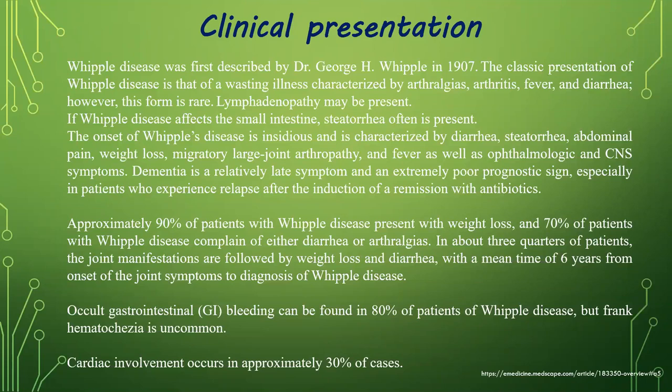Approximately 90 percent of patients with Whipple disease present with weight loss, and 70 percent complain of either diarrhea or arthralgias. In about three-quarters of patients, joint manifestations are followed by weight loss and diarrhea, with a mean time of six years from onset of joint symptoms to the diagnosis of Whipple disease. Occult gastrointestinal bleeding can be found in 80 percent of patients, but frank hematochezia is uncommon. Cardiac involvement occurs in around 30 percent of cases.